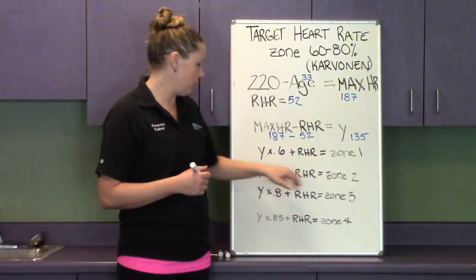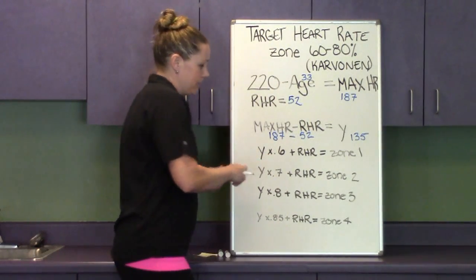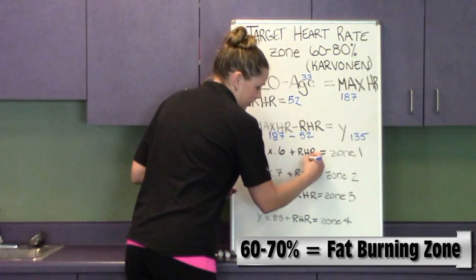Zone one, between zone one and zone two, which is between 60 and 70 percent of your heart rate, is going to be your fat burning zone.